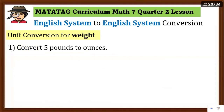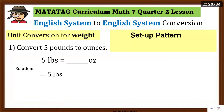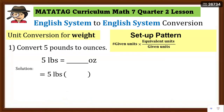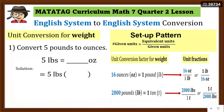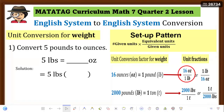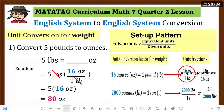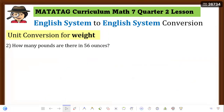Example 1: Convert 5 pounds to ounces. Write the equation: 5 lbs = ___ oz. Set up the pattern — the given unit is pounds, and we want ounces. Choose the unit fraction with pounds in the denominator: 16 ounces over 1 pound. Cancel pounds, then multiply: 16 oz × 5 = 80 ounces. So 5 pounds is equal to 80 ounces.